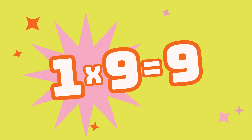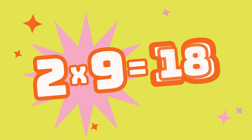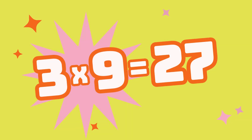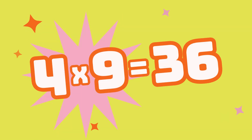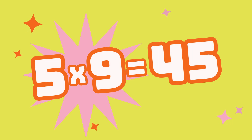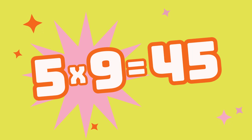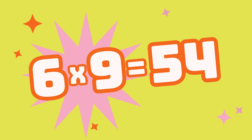1 multiplied by 9 equals 9. 2 multiplied by 9 is 18. 3 multiplied by 9 is 27. 4 multiplied by 9 is 36. 5 multiplied by 9 equals 45. 6 multiplied by 9 equals 54.